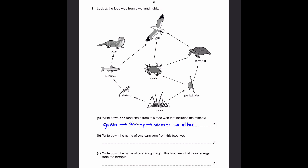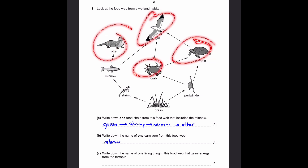Part B: write down the name of one carnivore from this food web. A carnivore is an animal which eats other animals. We can take that very same minnow from the previous example because it eats a shrimp, which is an animal, so minnow is a carnivore. Of course, there are many other answers: otter, gull, crab, and terrapin are other carnivore animals in this food web.